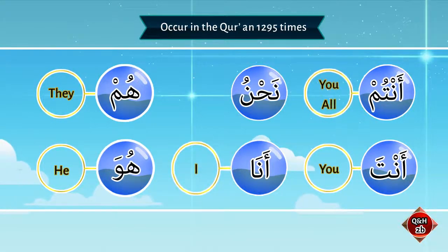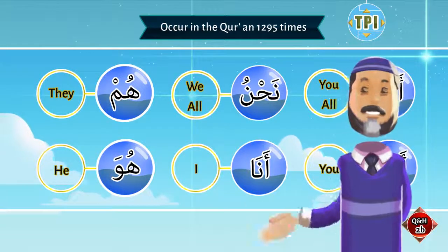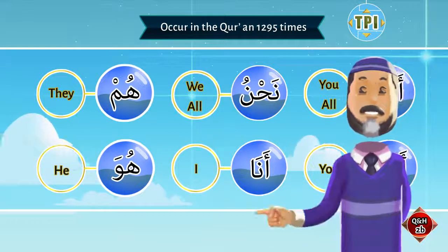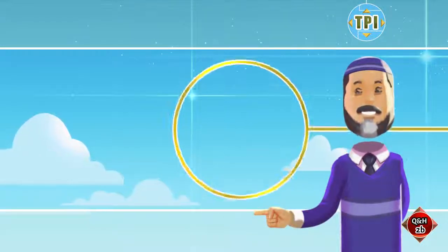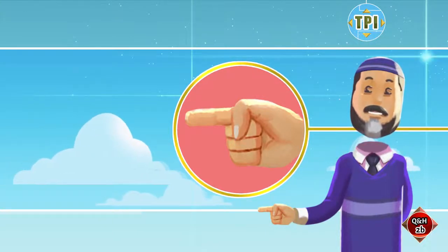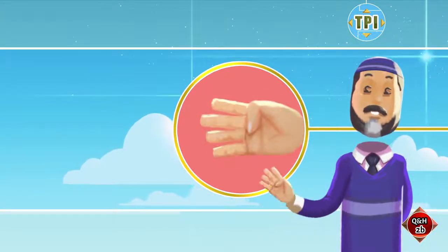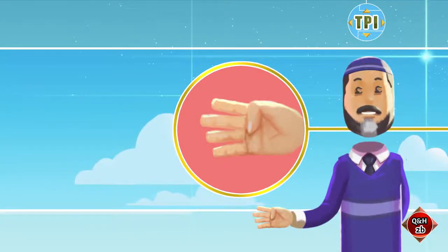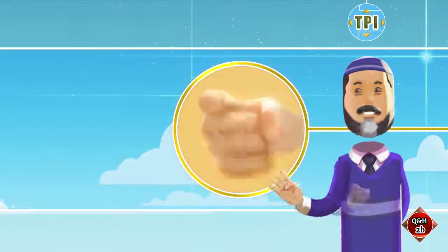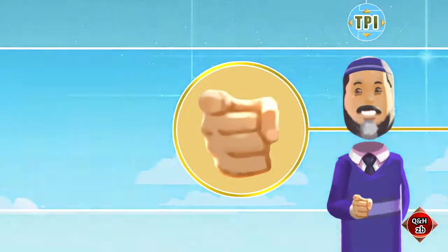For TPI, use your right hand to learn these six words. When you say 'hua,' point the index finger of your right hand towards your right, as if that person is sitting on your right. When you say 'hum,' point four fingers towards your right. When you say 'anta,' point the index finger towards someone in front of you.